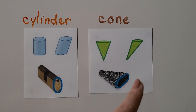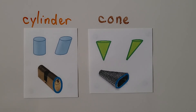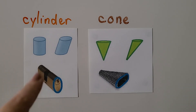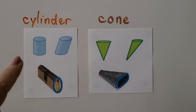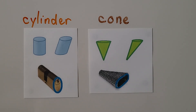Cylinders and cones have a curved surface, but their flat surfaces don't have to be circles. Sometimes they're circles, and sometimes they can be an oval. Some cylinders can have two oval flat surfaces, and some cones can have one oval flat surface — it's still a cone.